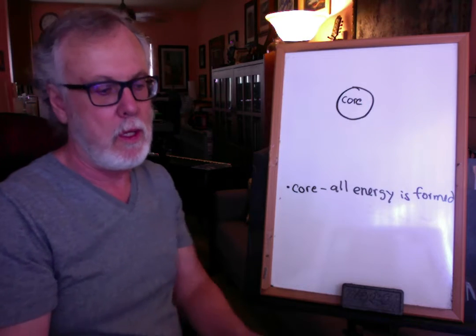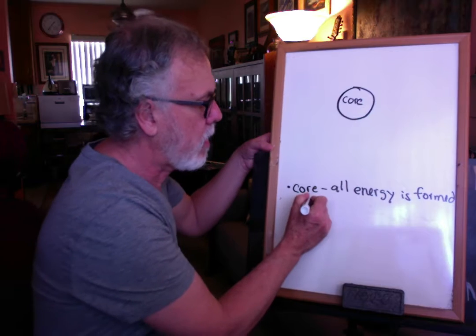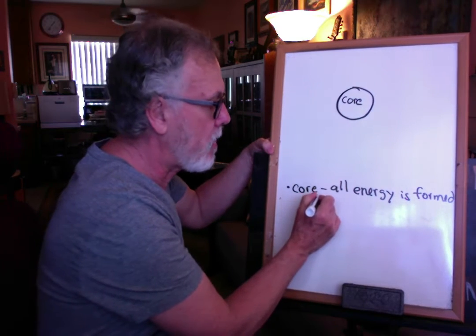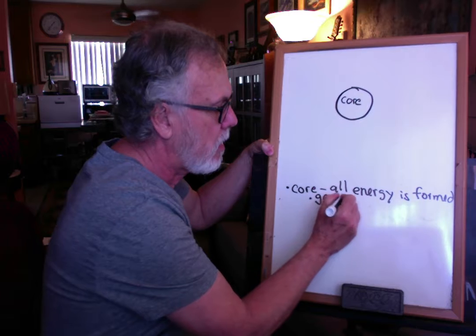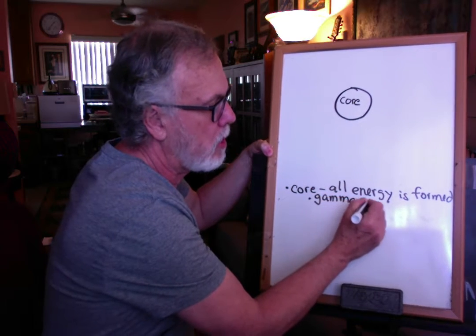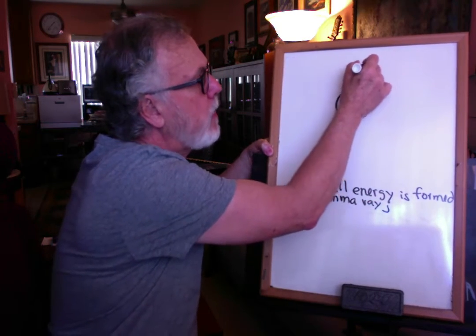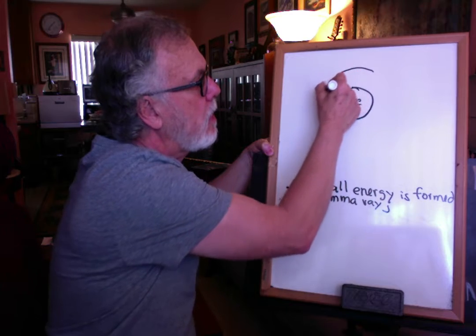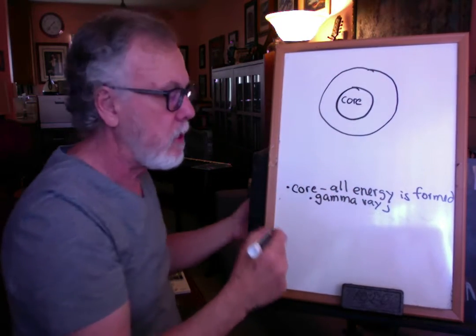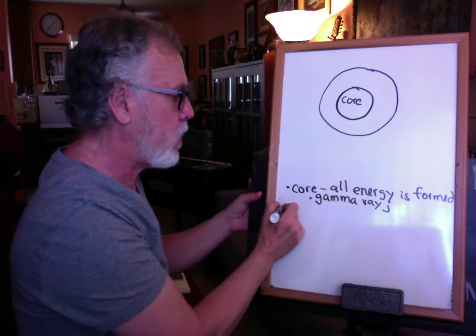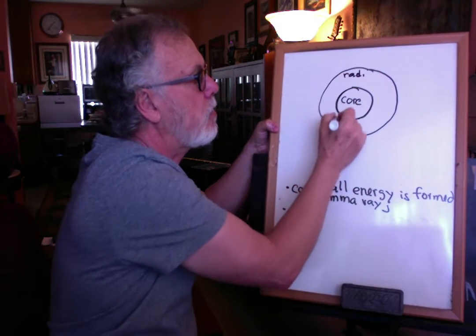That's where energy is formed, and what comes out are extremely powerful light photons called gamma rays, which we've talked about. They pass into a region of space right above the core, and in this region we call it the radiation zone, the rad zone.